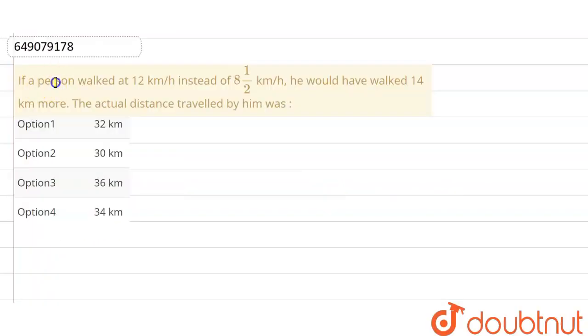Hello guys, here's your question. If a person walked at 12 km per hour instead of 8½ km per hour, he would have walked 14 km more.